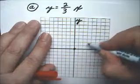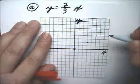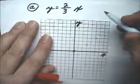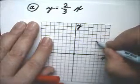So I'll go up 2 and to the right 3. Up 2 and to the right 3. Now if I wanted to, I could go up 2 and to the right 3.